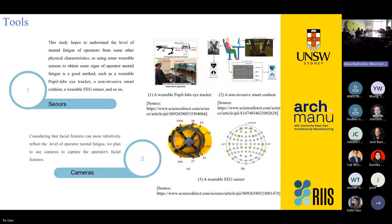We plan to use two different tools in this study. The first tool is sensors. This study hopes to understand the level of mental fatigue from physical characteristics, so using wearable sensors to obtain signs of operational mental fatigue is a good method — such as wearable eye-tracking devices and a non-invasive smart cushion. We also want to use cameras. Since facial features can more intuitively reflect the level of operational mental fatigue, we plan to use cameras to capture operators' facial features.